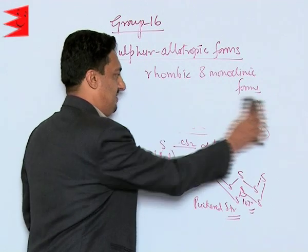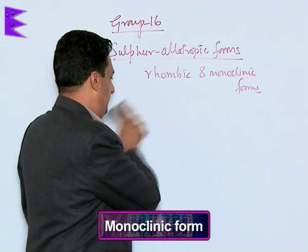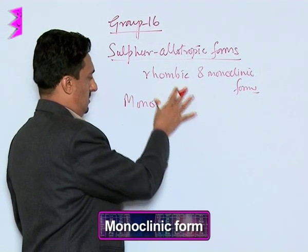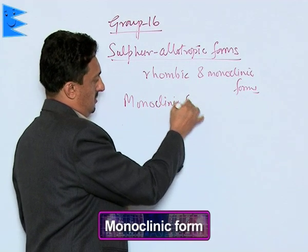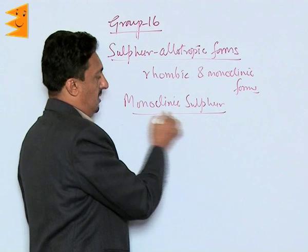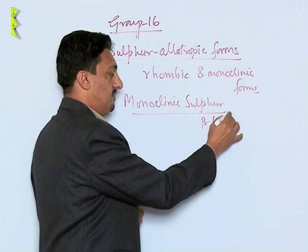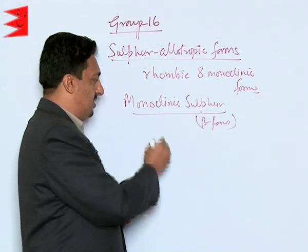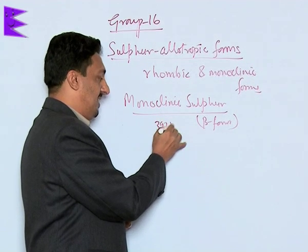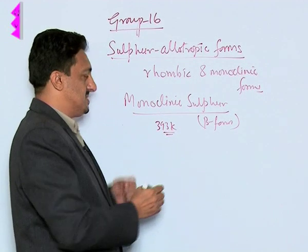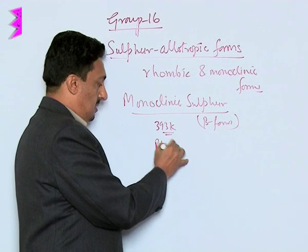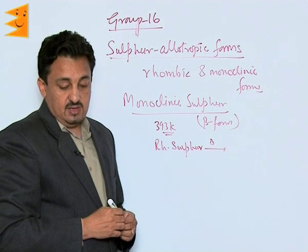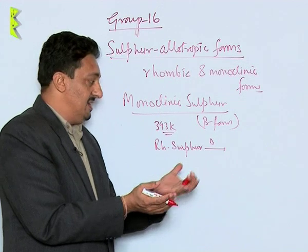Monoclinic Sulphur is also called the beta form. Its melting point is slightly higher than rhombic Sulphur at 393 Kelvin. It is prepared by heating rhombic Sulphur in a china dish and then allowing it to cool down.